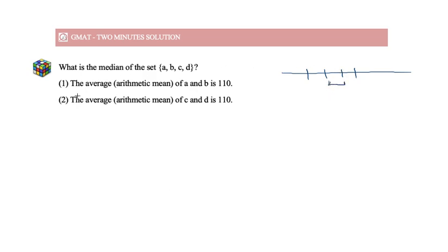Look at statement 1. The average of A and B is 110. We do not know anything about C and D, so this statement alone cannot be sufficient. Look at an example in case you are not sure. Let's say both A and B lie at 110. If C is over here and D is over here, in that case median is here. But if C is over here and D is over here, in that case median is here. So statement 1 alone doesn't give us the median.